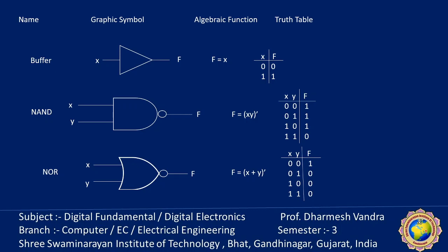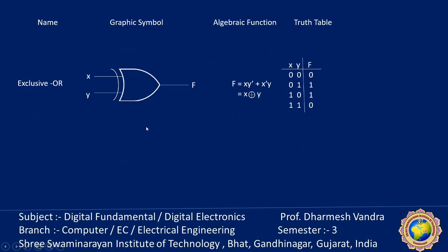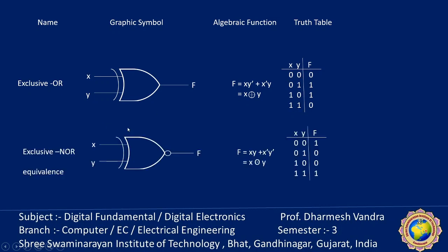We will discuss in later lectures how to implement any function with NAND and NOR gates. Another important gate is the Exclusive OR gate — its symbol is like an OR gate but with an additional arc at the input side. The function is x·y̅ + x̅·y; when both inputs are different the output is 1, and when both are the same the output is 0. The Exclusive NOR (XNOR or equivalence gate) is the complement — x·y + x̅·y̅; when both inputs are the same the output is 1. It is popularly used to compare two unknown numbers.